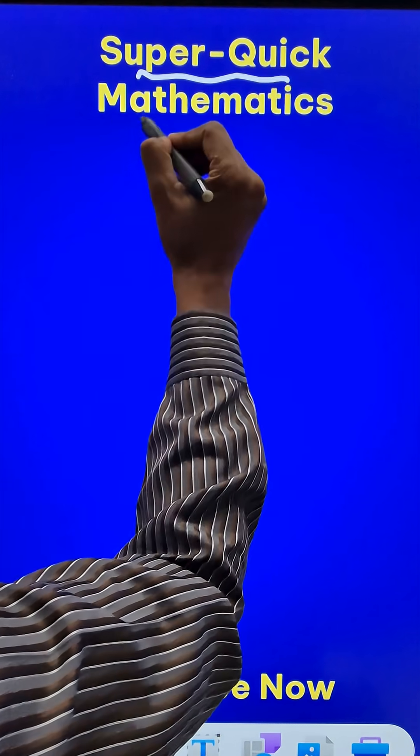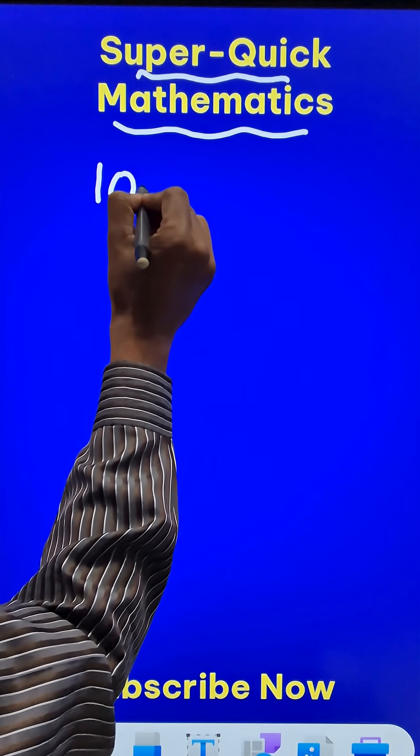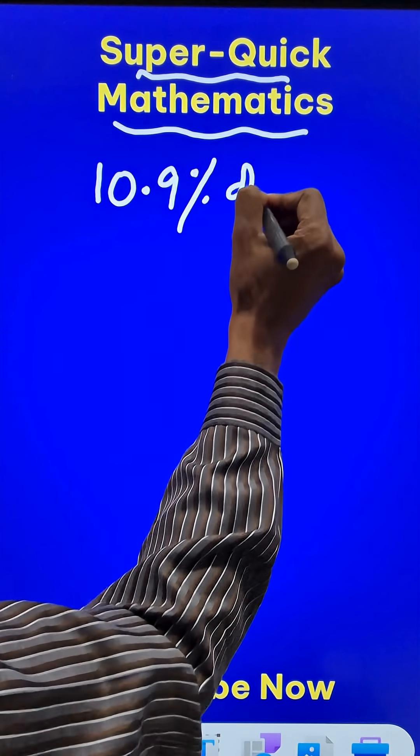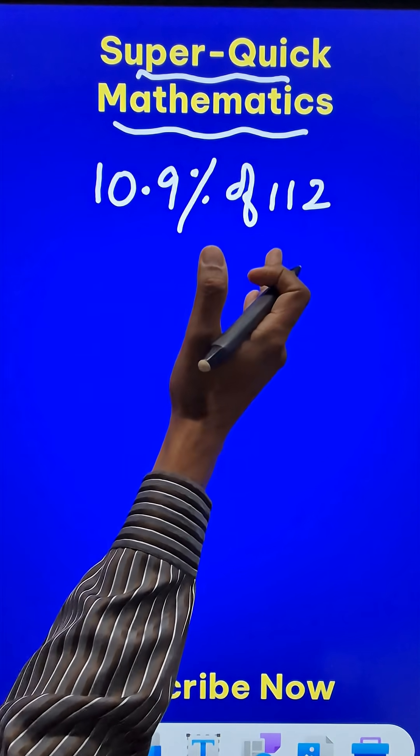Here is an example of a super quick mathematic shortcut trick to find a particular percentage like 10.9 percent of some three-digit number like 112. Now, what is the main thing to be observed here?